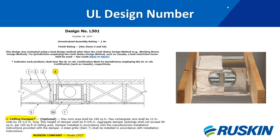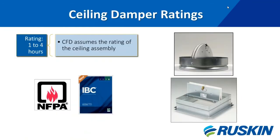Once the damper passes the fire test, the manufacturer's damper model can be added to the design, or a new ceiling design number will be assigned for that product. Ceiling dampers can have a fire resistance rating from one hour up to four hours depending upon the structure they are installed in. Wood joist and wood truss assemblies only have a one-hour fire resistance rating.